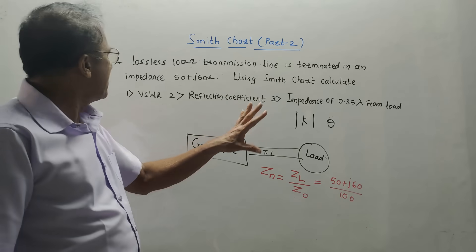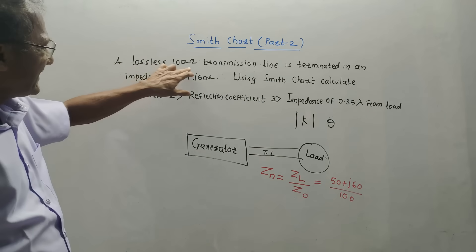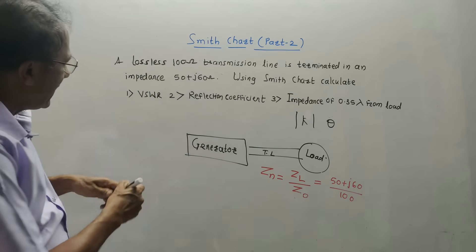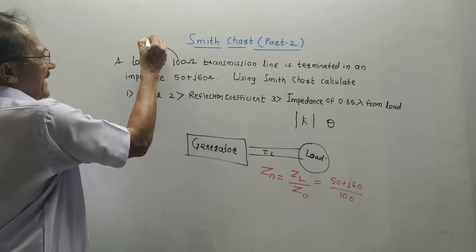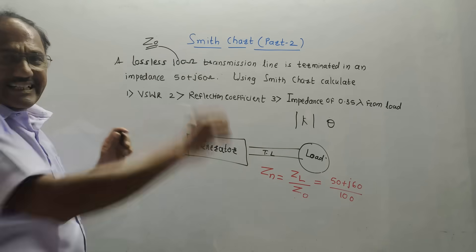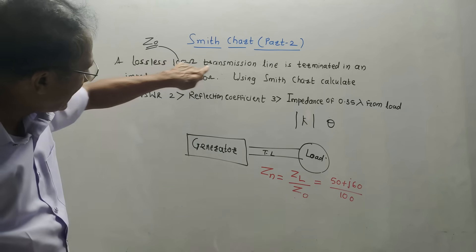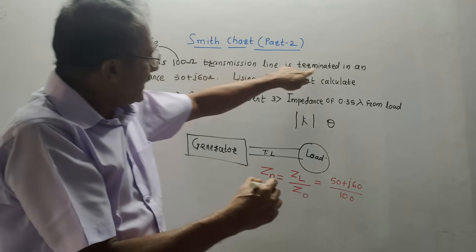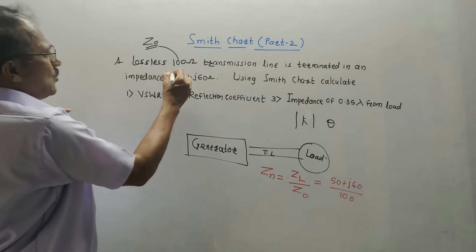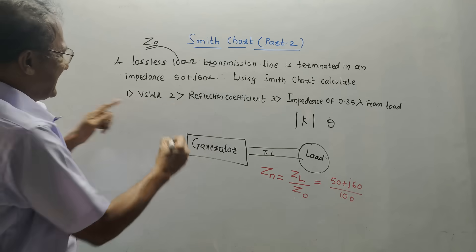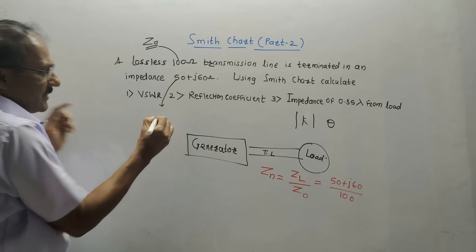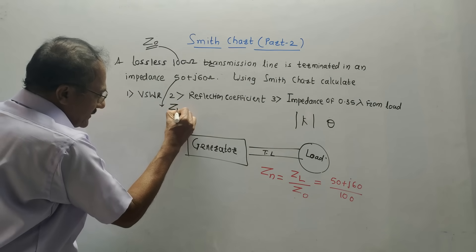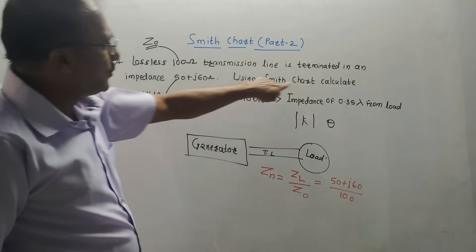Let us solve one numerical using the SMIC chart. The question is: a lossless 100 ohm transmission line — the word lossless and this value indicate the characteristic impedance Z0. So Z0 is 100 ohms, and the line is terminated in an impedance ZL whose value is given as 50 plus j60.